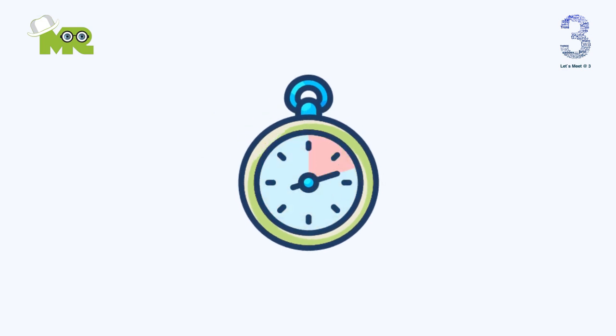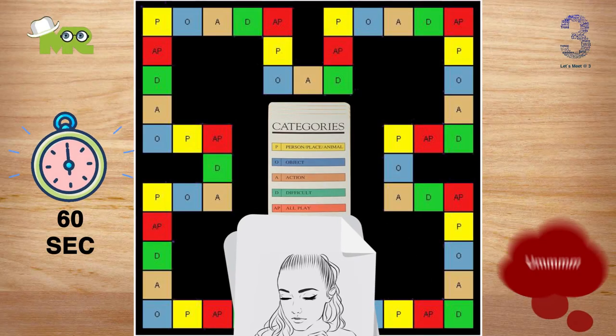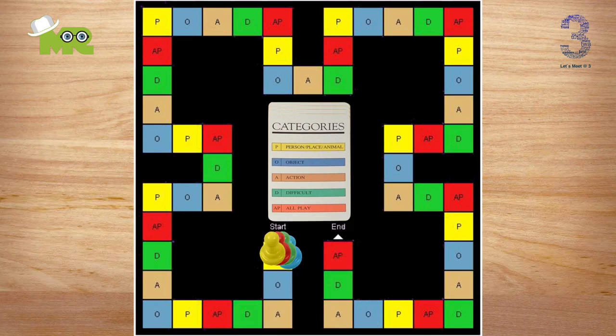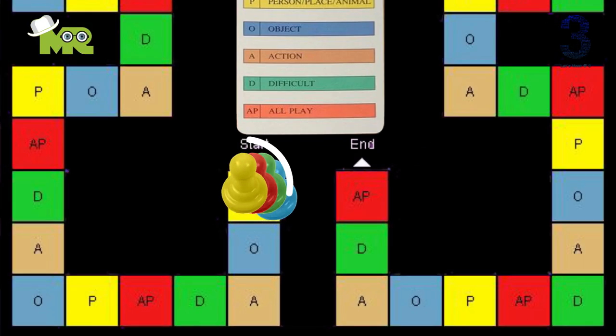After five seconds, start the timer. The picturists will have 60 seconds to draw while their teammates try to guess the word. The first team to guess the word correctly wins control of the die.